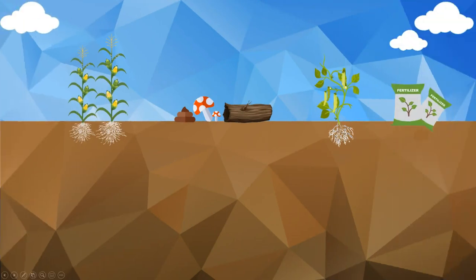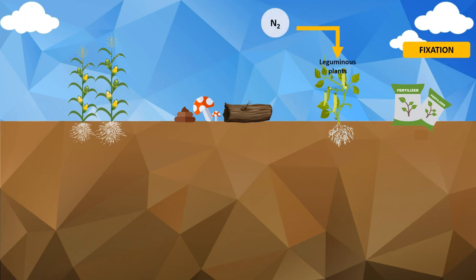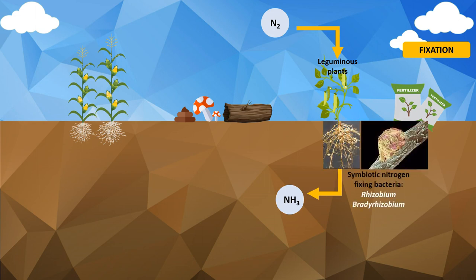Let's begin with nitrogen fixation. This process reduces the atmospheric nitrogen gas to ammonia gas. Nitrogen in the atmosphere can be fixed by leguminous plants through a symbiotic association with nitrogen-fixing bacteria such as Rhizobium and Bradyrhizobium. These symbiotic nitrogen-fixing bacteria infect the roots of leguminous plants to form root nodules.